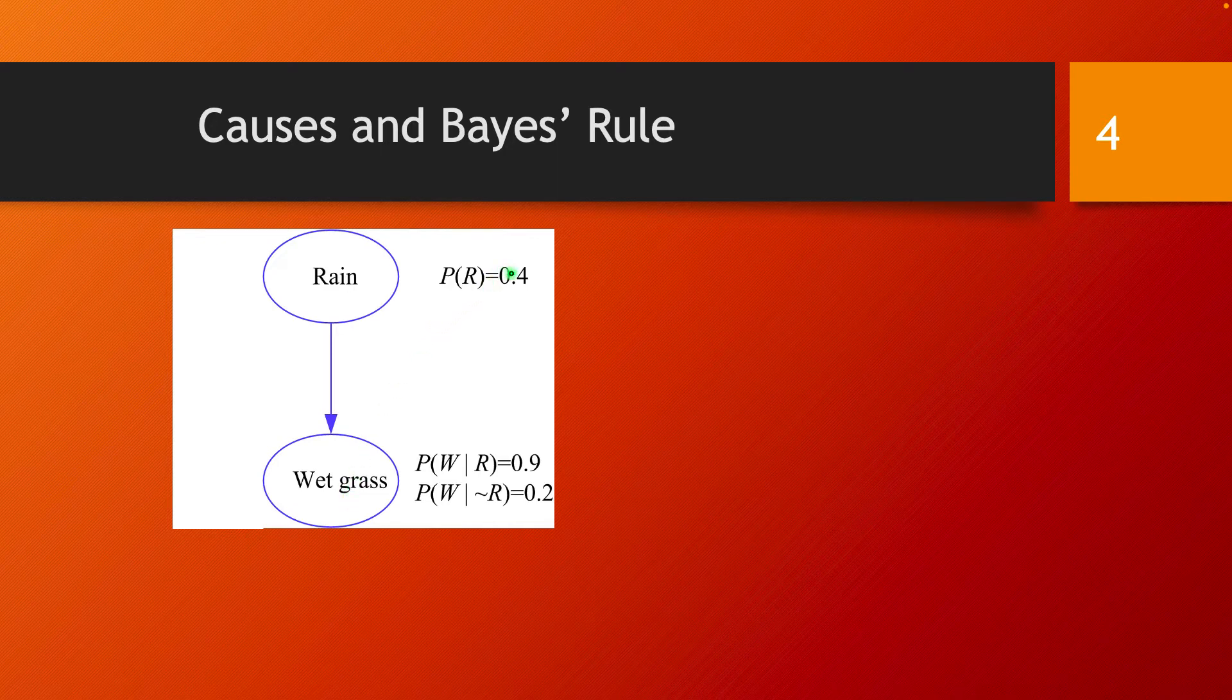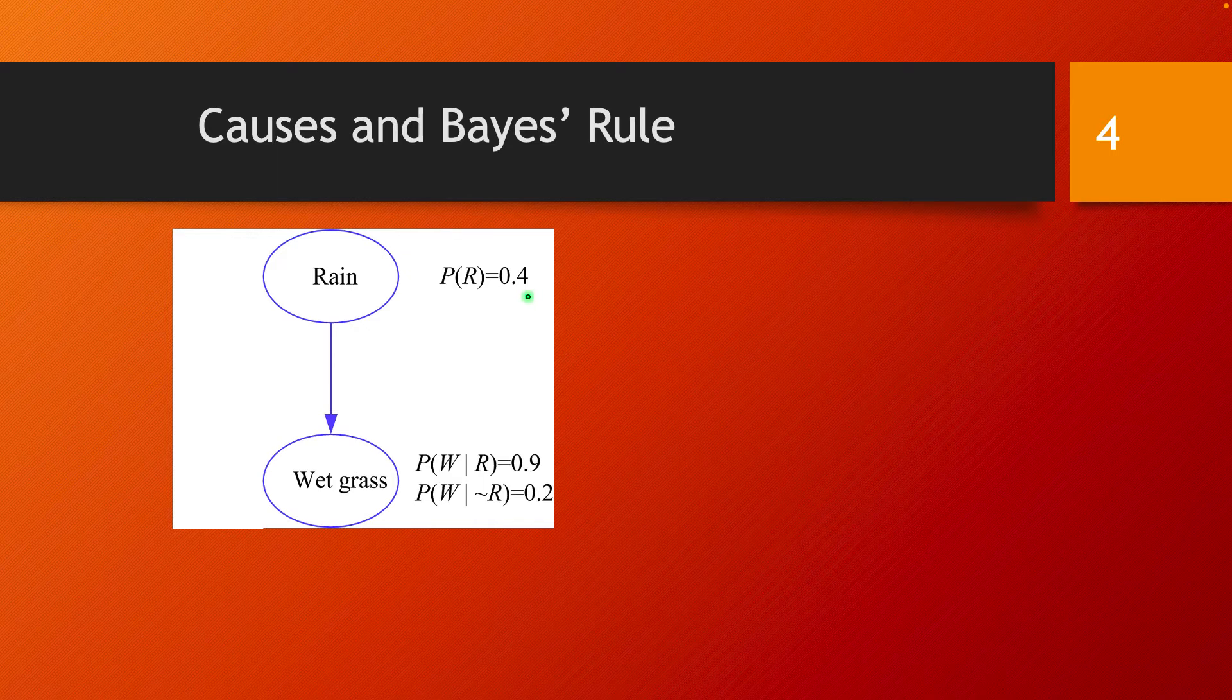We know that in our area the probability of having a rainy day is 0.4. And also we know that the probability of the grass getting wet if we have a rainy day is 0.9. This represents the fact that maybe the rain sometimes is so light that it's not enough for the grass to get wet.